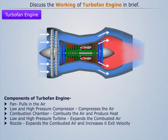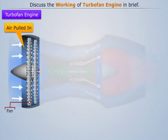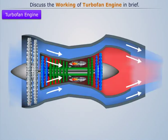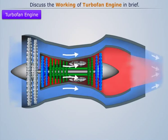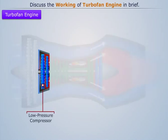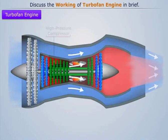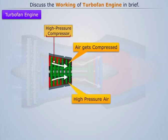Now let's understand its working. The fresh air gets pulled in by the fan, similar to a propeller in the turboprop engine. Some part of this air moves through the bypass air duct, whereas the rest of the air gets sucked into the low pressure compressor, which compresses it to an intermediate pressure. This compressed air then passes through the high pressure compressor, where it gets compressed further to a higher pressure.